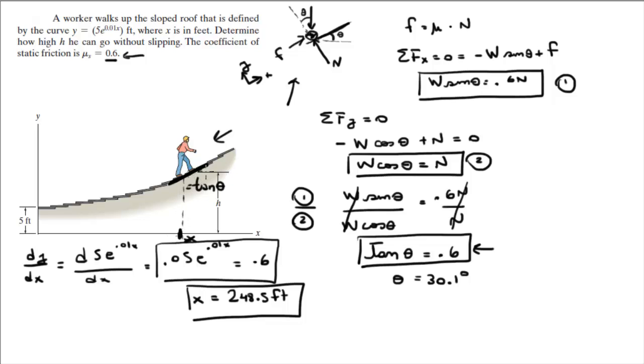And we need to find the h, which is equal to the y on the function. So f of x is equal to 5e to the 0.01x. It was given at the beginning of the problem. So f of 248.5 is equal to 5e times 0.01 times 248.5, which is plugging the x value on the function. And we get the y, which is 60 feet.